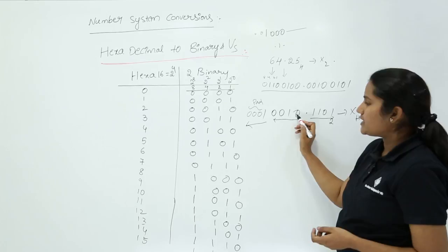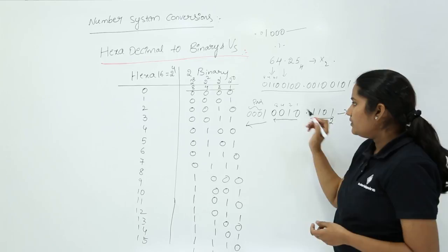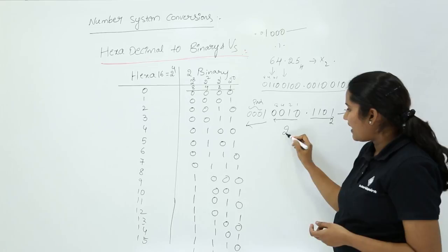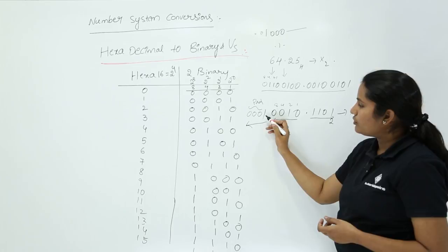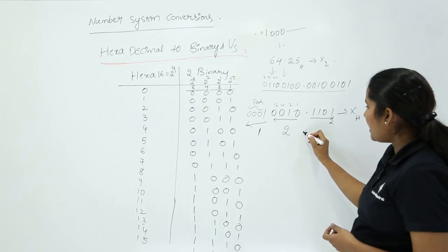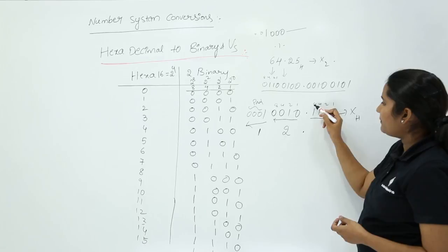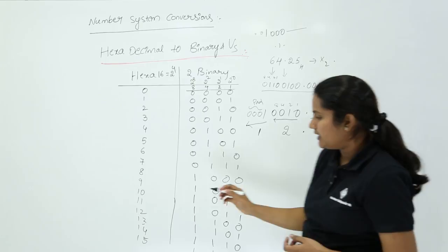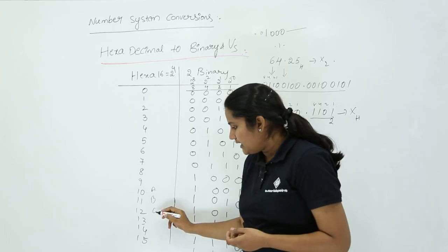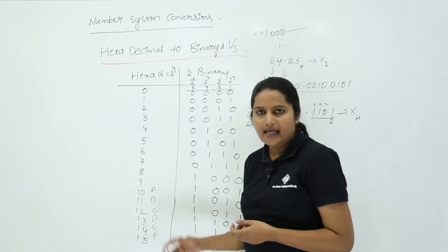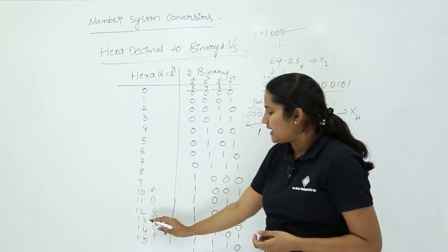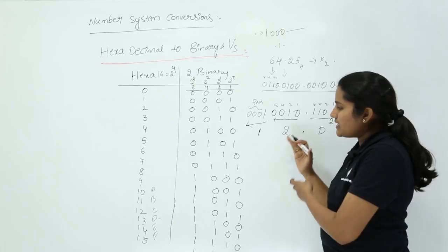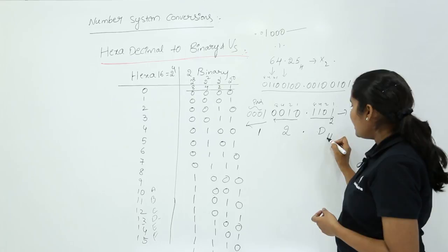Decoding the first group 0010 using 8-4-2-1: only the 2's place is 1, so the value is 2. The next group has only the 1's place enabled, giving 1. So far we have 2 and 1 — that is '21' before the point. Decoding the group after the point: 8 plus 4 plus 1 equals 13. Since 13 in hexadecimal is D (where 10=A, 11=B, 12=C, 13=D, 14=E, 15=F), the final hexadecimal equivalent is 21.D hex. In this way we can convert any hexadecimal to binary and any binary to hexadecimal.